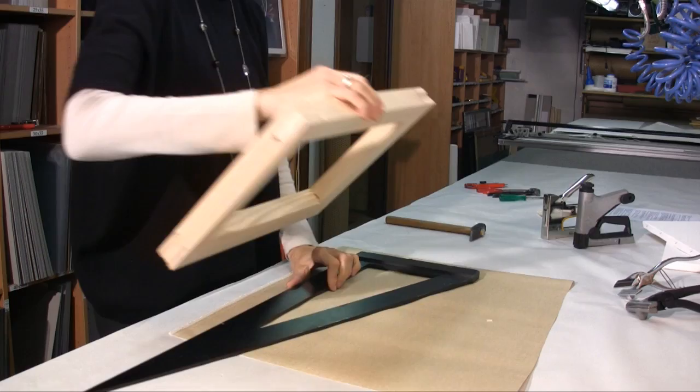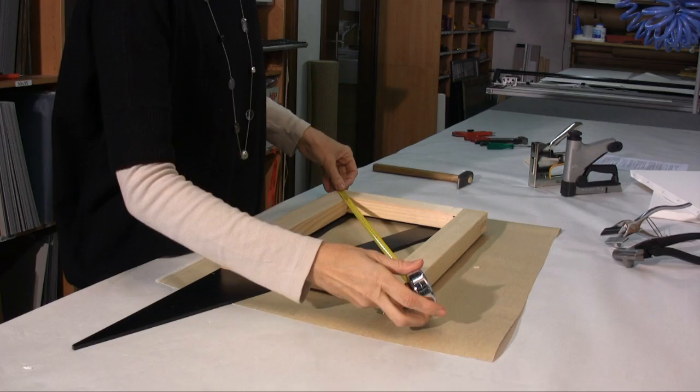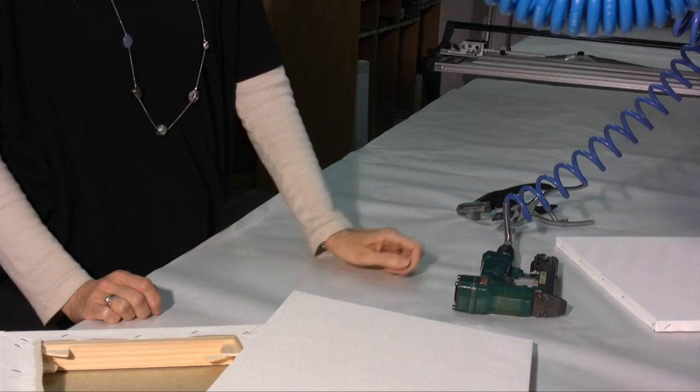After having assembled the four strips, it's best to check that the frame is perfectly squared. To do this, one can use a framing square or, as we see here, a glass square. Furthermore, it's better to check that the measurement of the two diagonals is the same.